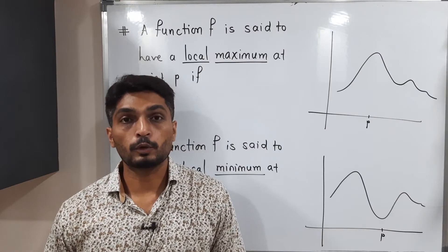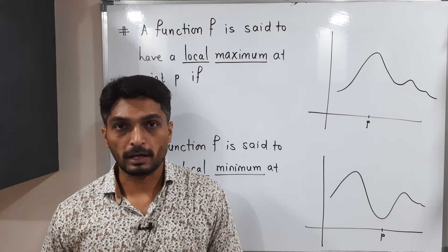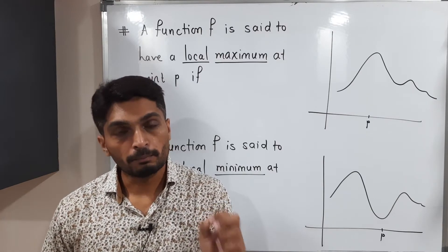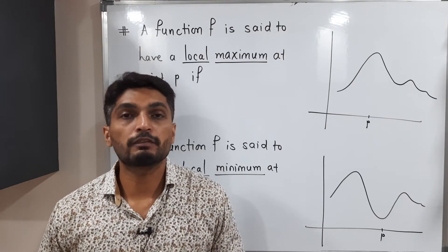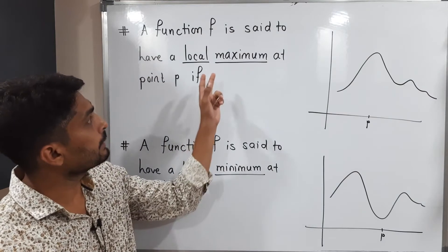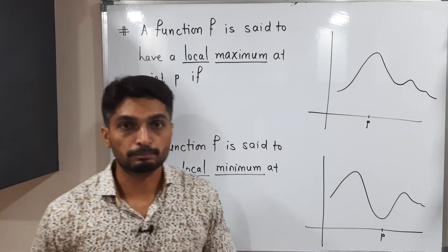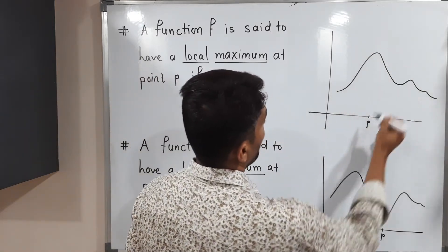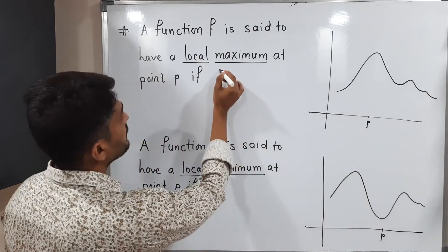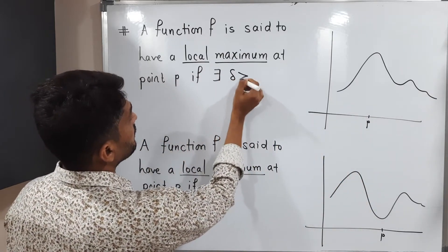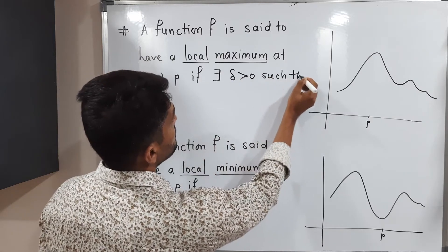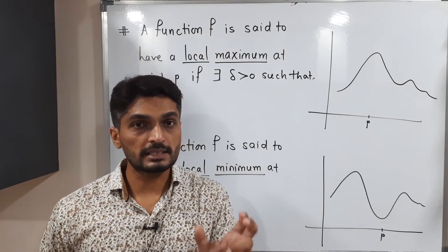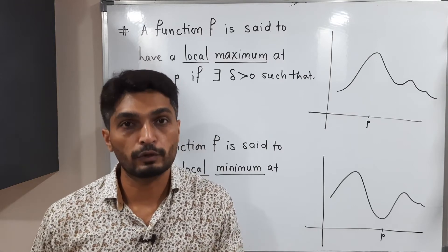Let us discuss the concept of local maxima and local minima. Local maxima means that in a local region, the function has a maximum value at a particular point. First we will focus on local maximum, then local minimum. A function is said to have local maxima at point P if there exists Delta greater than zero. We take Delta because we are talking about a neighborhood of P where the function should have a maximum value.